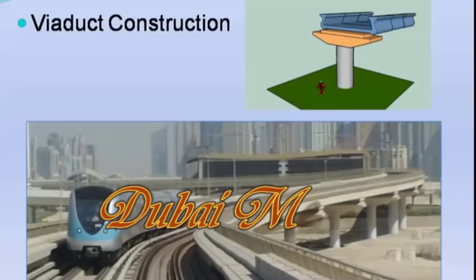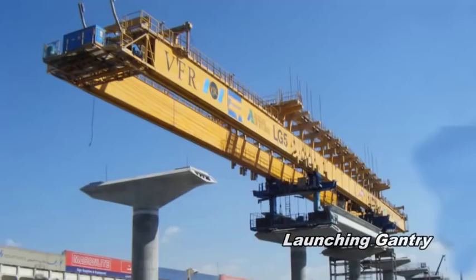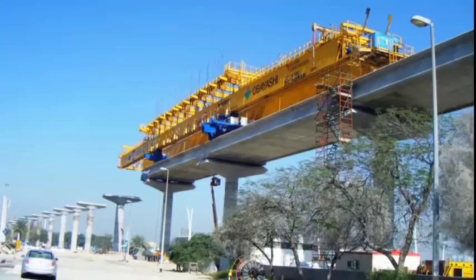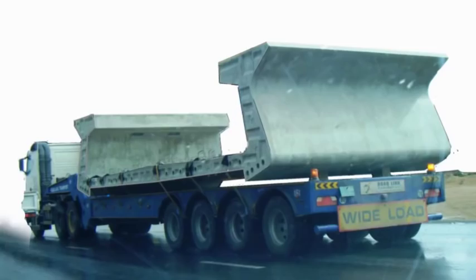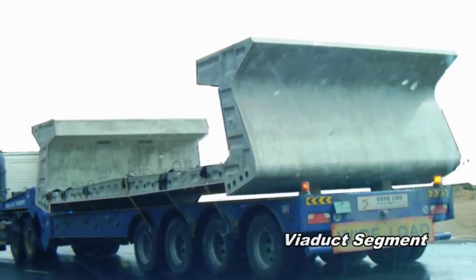The viaducts were constructed using the span-by-span method with U-shape precast concrete segments, erected using a self-launching gantry. Average span was 45 meters; segments were 10 meters wide by 4 meters long and weigh 55 tons. The placed segments were post-tensioned and the cable ducts were grouted.